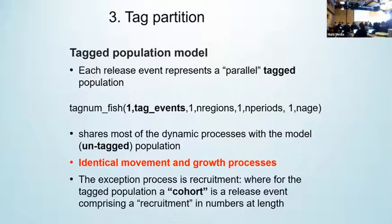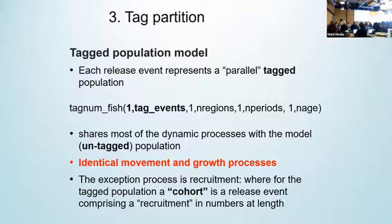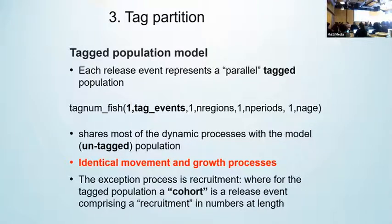In the code, the dynamic processes and parameterizations that apply to the tag population are implemented in exactly the same manner as the untagged population, except that the outer loop and all of the calculations are in respect of the release event dimension.